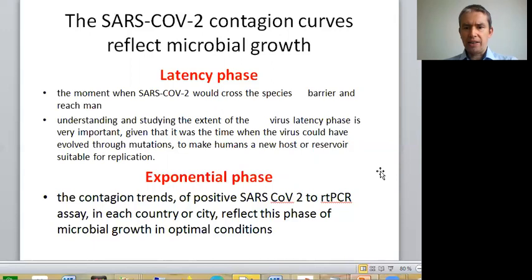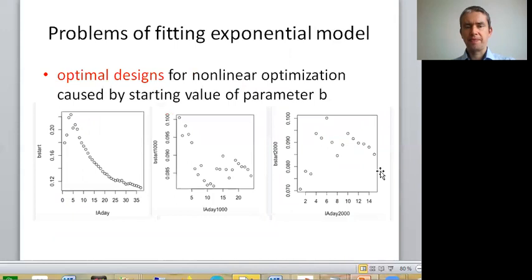When the exponential curve occurs, that already means this is the contagion trend of positive SARS-CoV-2 by RT-PCR assay. In each country or city, this reflects the phase of microbiological growth in optimal conditions, so the virus is already stabilized in the host and going to enter other hosts.